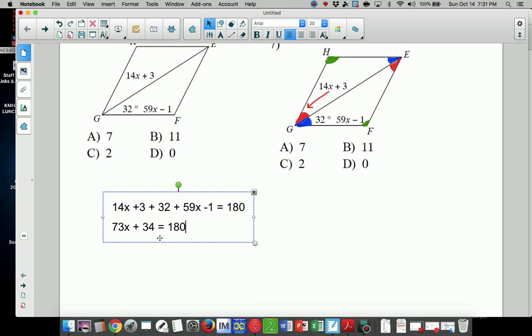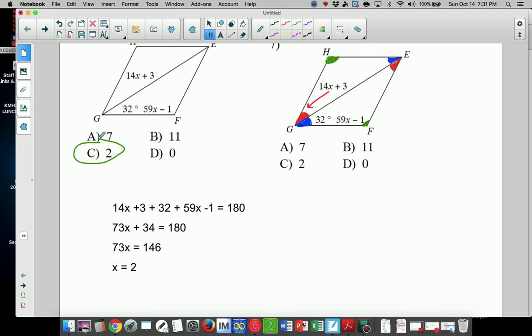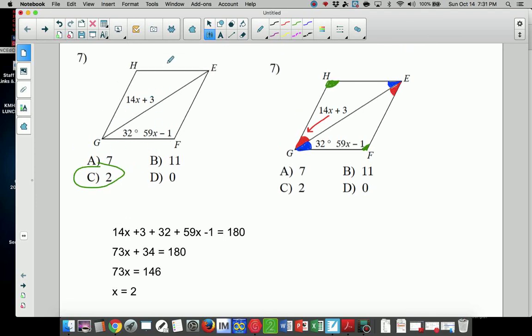So I get 73x equals 146. And if I divide 146 by 73, x will equal 2. So my answer for number seven is 2, because I am just solving for x. And it's just basic algebra, even though it looks harder than it is. You guys got this!